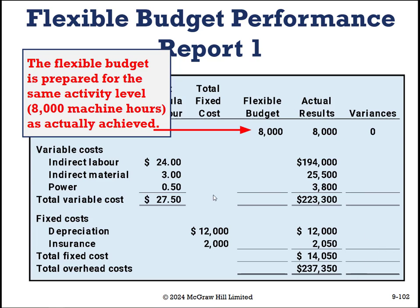When looking at reports using a flexible budget, we calculate what the budget is for the same activity that is actually achieved. We take our actual results, then our budgeted costs times our actual activity level, and look at the variances accordingly. What is the variance for indirect labor when the flexible budget of 8,000 hours is compared to the actual results? Is it $2,000? Is it $6,000? Favorable or unfavorable? Give it a pause and calculate.